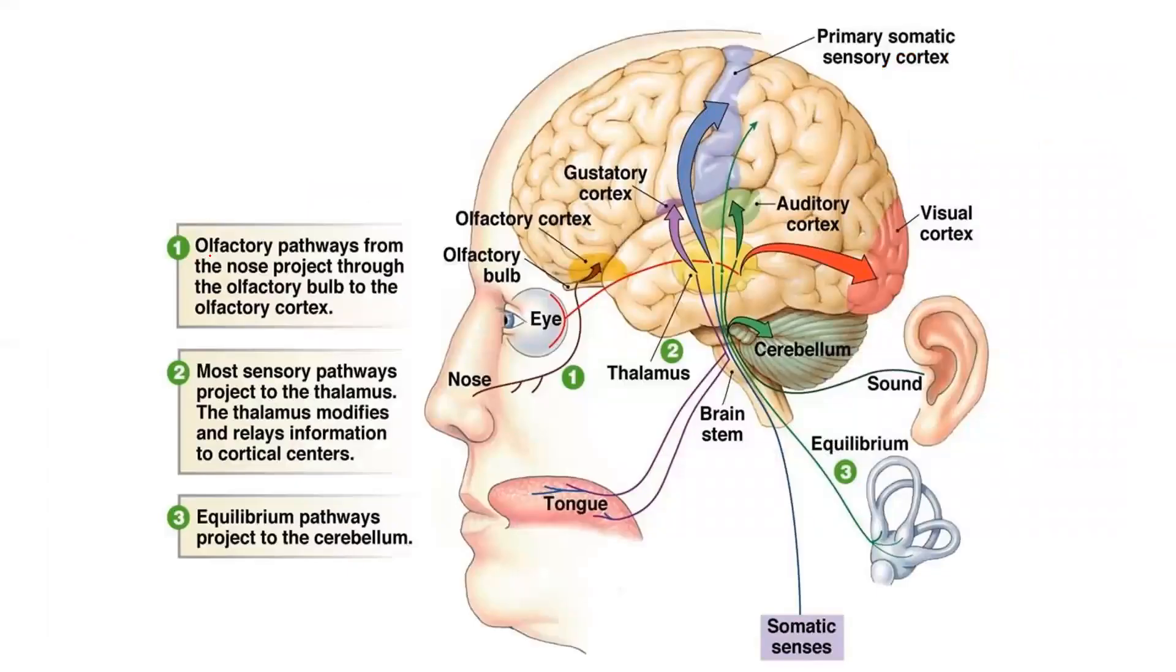Smell is olfaction. Most sensory pathways project to the thalamus. We've talked a bit about that. Equilibrium pathways project to the cerebellum. So that's a great diagram. Spend a little time going through that.